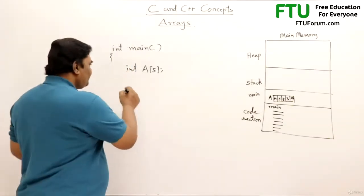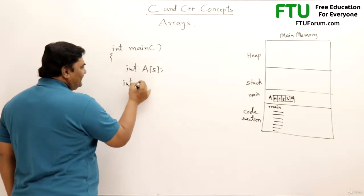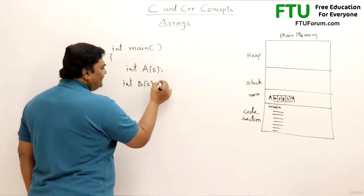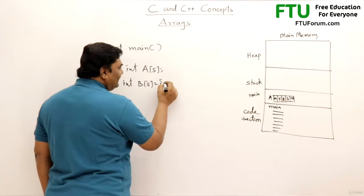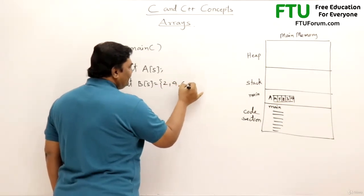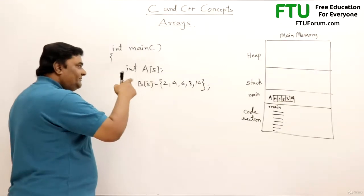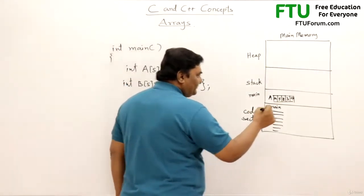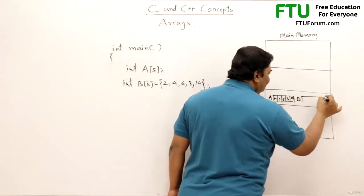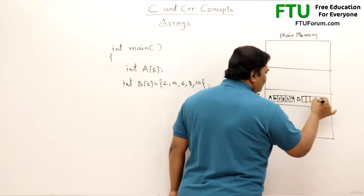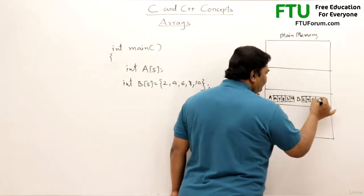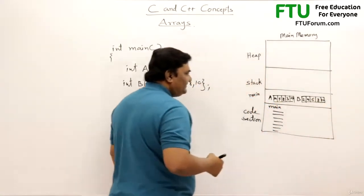Now next thing I will show you how to declare and initialize an array. This is the declaration of an array. Along with this I can also initialize it like 2, 4, 6, 8, 10. So array will be created and it will be already filled with the values. Like suppose an array B is created inside the stack, then it will be filled with the values 2, 4, 6, 8, 10.